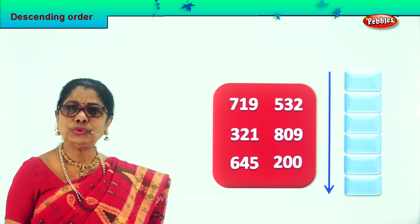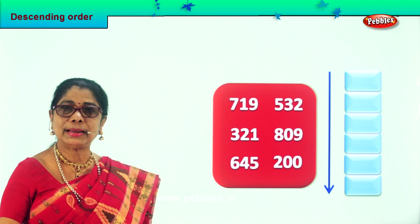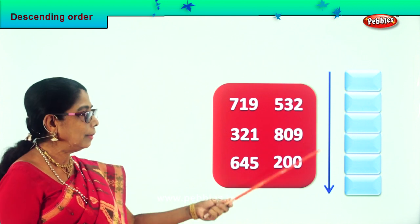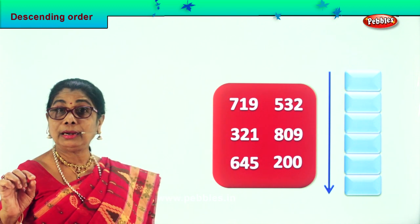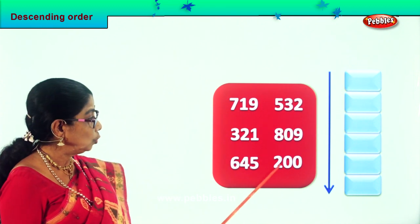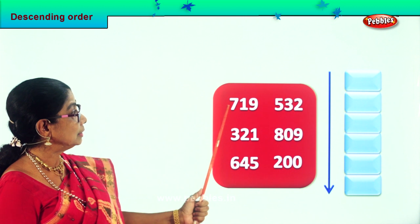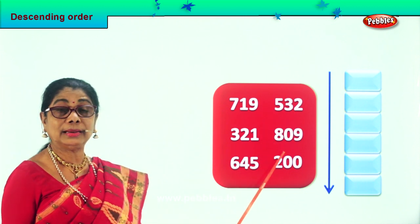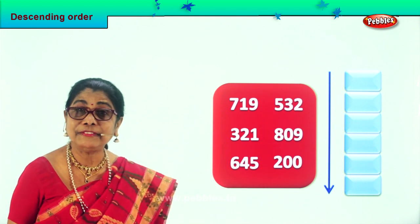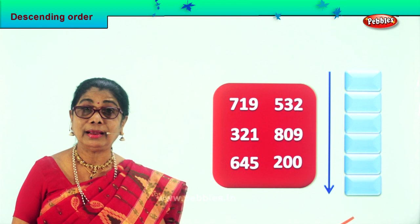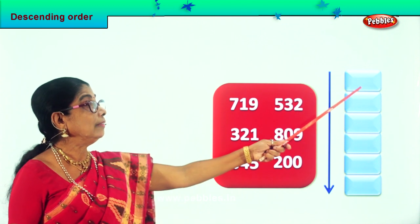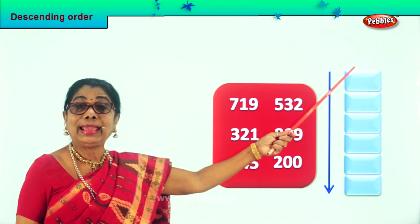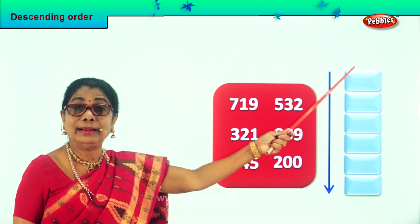We have to find the biggest number. Among the six, which is the biggest and we have to put it over there. Let's look at the hundredth place: two hundred, six hundred, three hundred, seven hundred, five hundred, eight hundred. Definitely eight hundred nine — the biggest number available here — and we'll put it right on the top. Eight hundred nine.